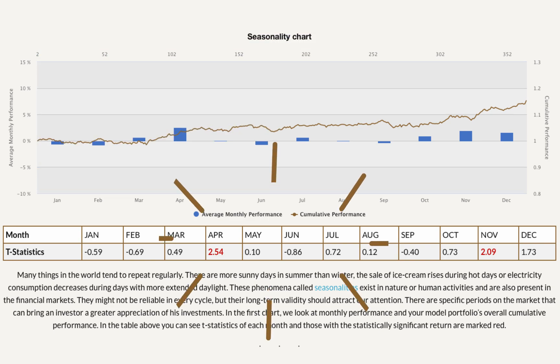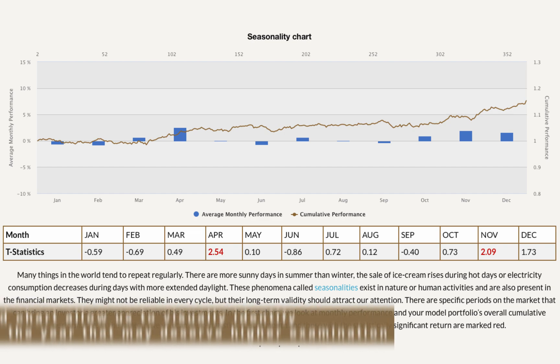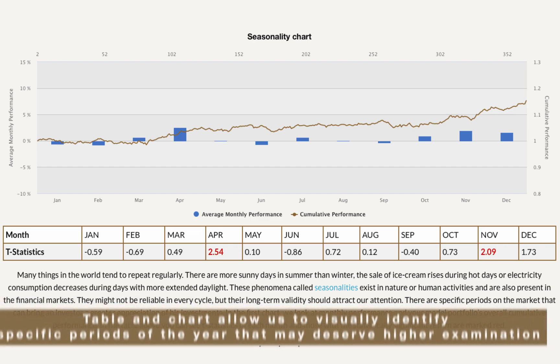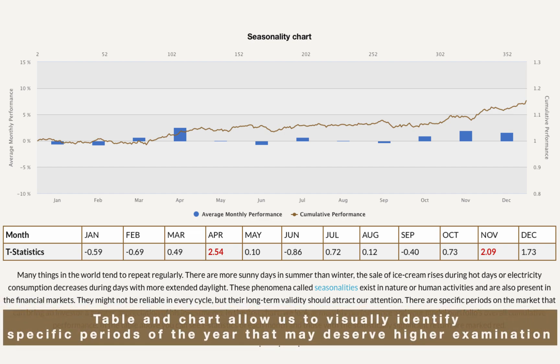In the table below, we can see T-statistics of each month, and those with statistically significant return are marked red. The table and chart allow us to visually identify specific periods of the year that may deserve higher examination.